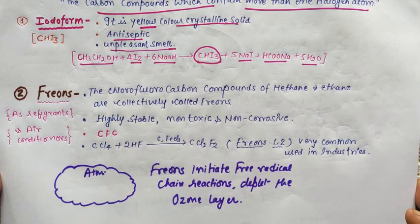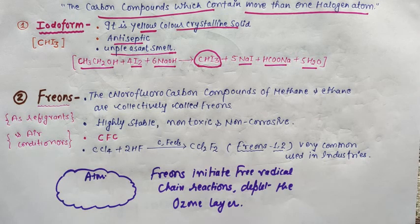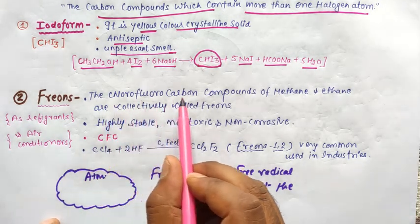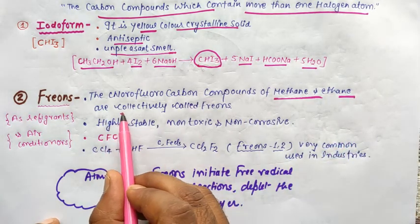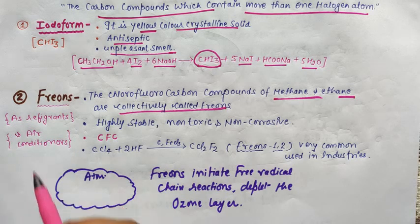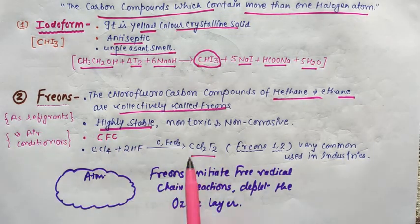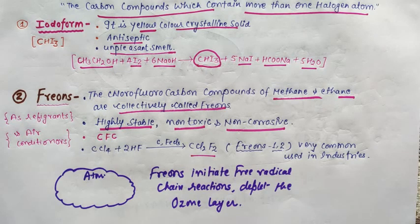Next, our second compound is Freons. The chlorofluorocarbons of methane and ethane are collectively called Freons. Freons is a class of compounds - methane and ethane compounds. These Freons are very highly stable, non-toxic, and non-corrosive.